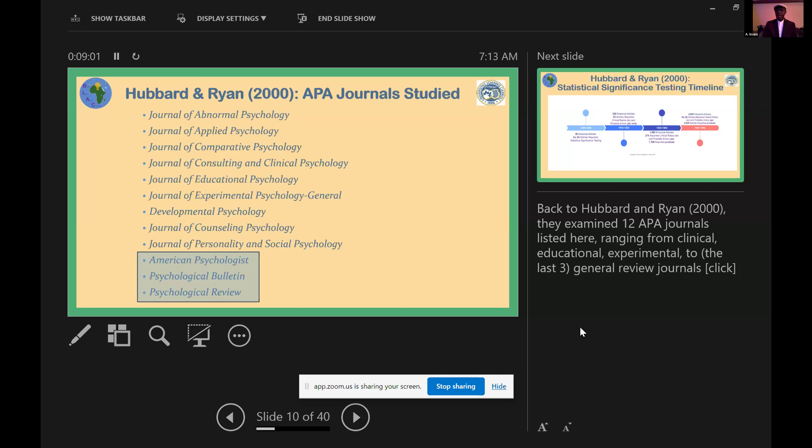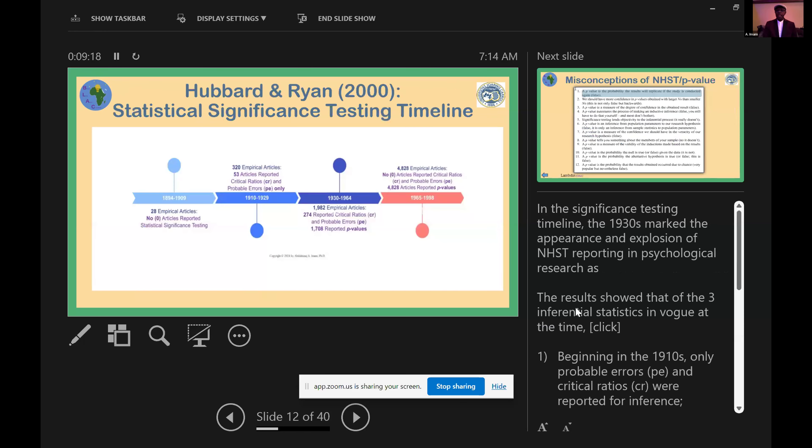Back to Hubbard and Ryan, they examined 12 APA American Psychological Association journals listed here, ranging from clinical, educational, experimental to the last three general review journals. In the significance testing timeline, their data showed the 1930s marked the appearance and explosion of NHST reporting in psychological research.